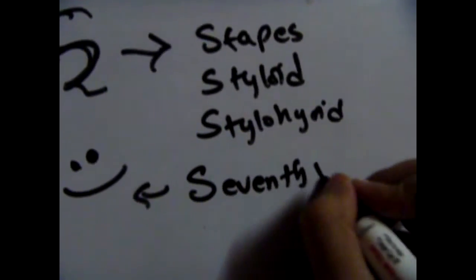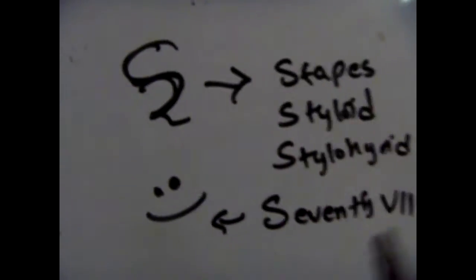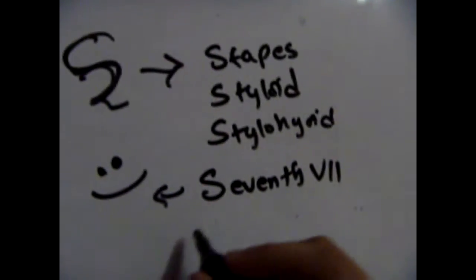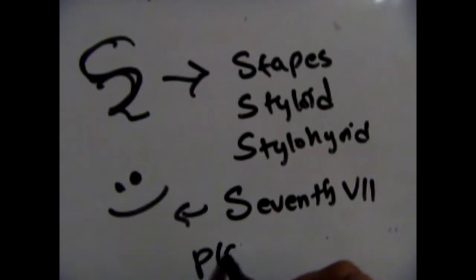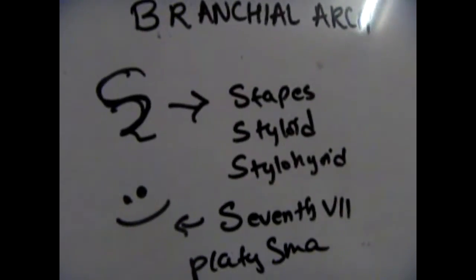Smiling is done with the seventh cranial nerve, which is the facial nerve, so you remember the nerve with the letter S, which comes with two. That's pretty easy. And oh yeah, platysma also has an S.